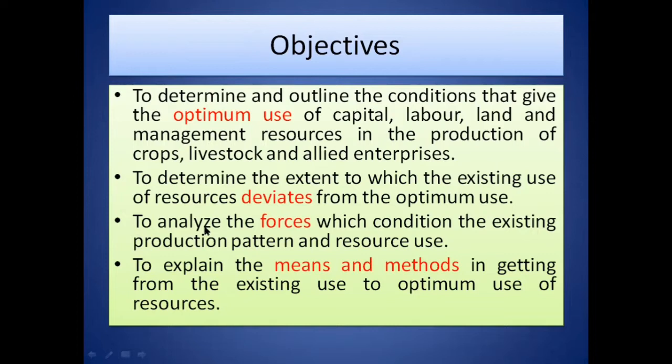The third objective is to analyze the forces which condition the existing production pattern and resource use — forces such as demand, supply, and many others. The fourth objective is to explain the means and methods for getting from the existing use to the optimum use of resources. These are the four major objectives of agricultural production economics.